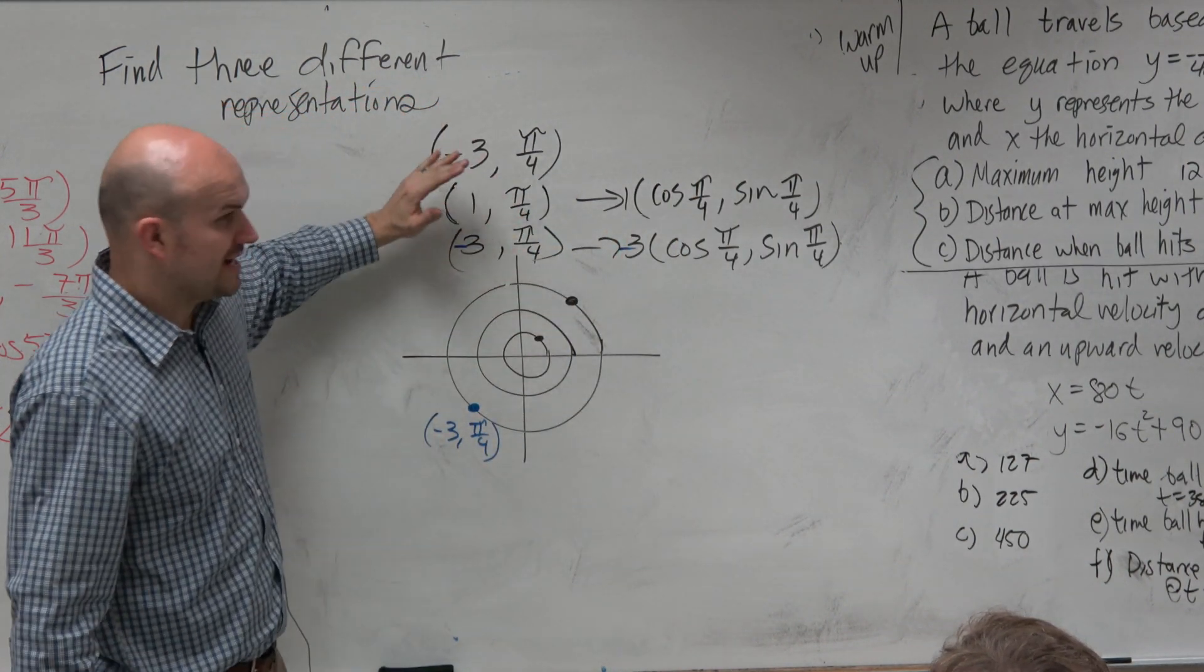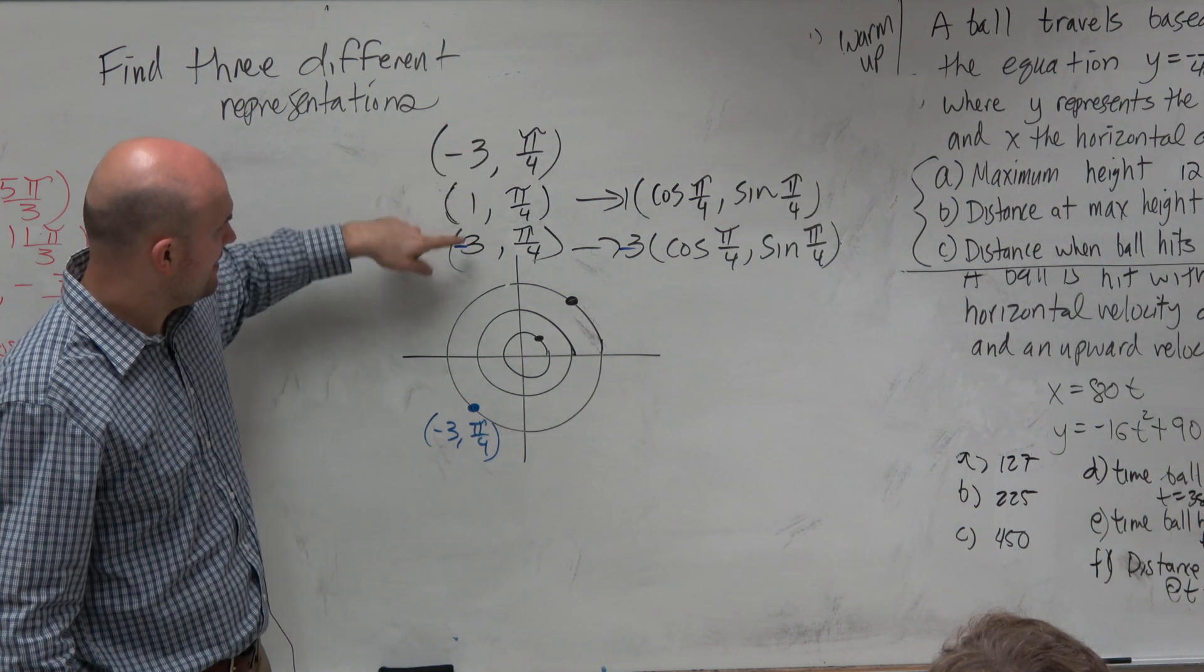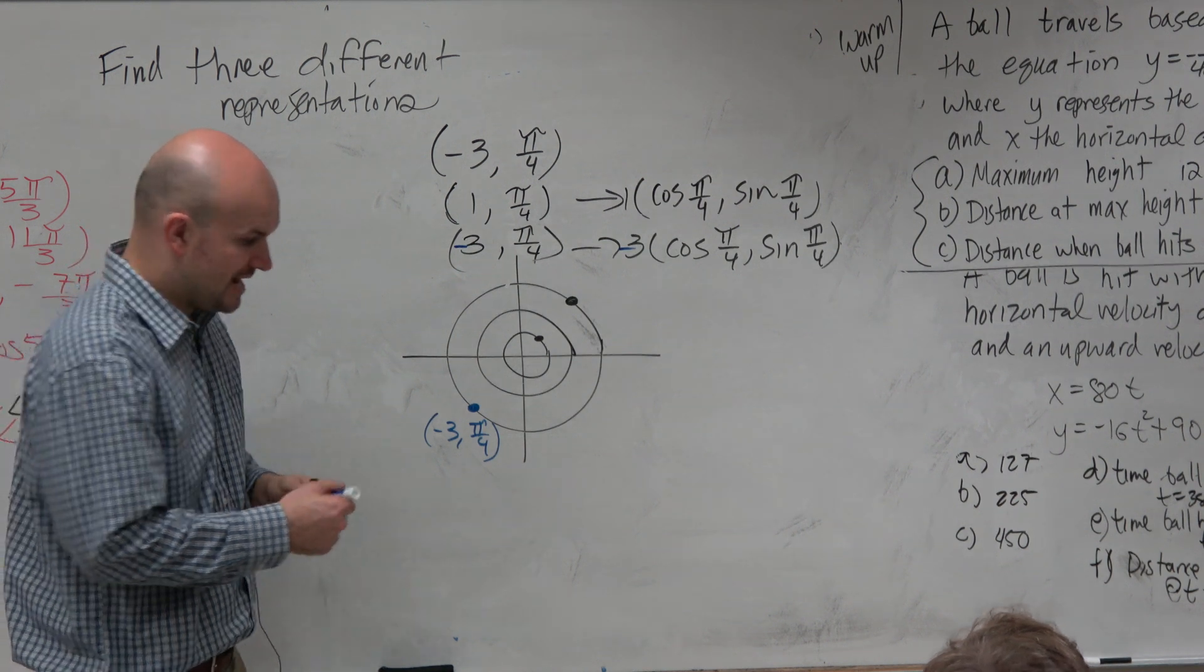So when you see this negative, what I like to do is just forget about it, graph it as normal, and then take the negative to reflect it about the origin.